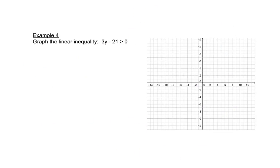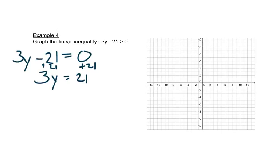So we'll do one more, or actually two more, but we'll look at this problem next. And again, we're going to look at this first as if it was equal to 0. So we have 3y, we'll add 21 to both sides, 3y equals 21. Then we'll divide both sides by 3, and we get y is greater than, or y is equal to 7.